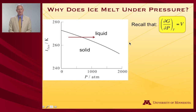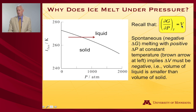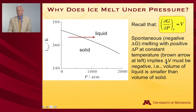Let's address from a more thermodynamic perspective: why does ice melt under pressure? The partial derivative of the Gibbs free energy with respect to pressure at constant temperature is the volume. If melting is a spontaneous process — taking something from solid to liquid — it has a negative delta G. We're increasing the pressure, so a negative delta G divided by a positive delta P implies a delta V that is negative: a negative number divided by a positive number is a negative number. That is, the volume decreases going from the solid to the liquid phase.